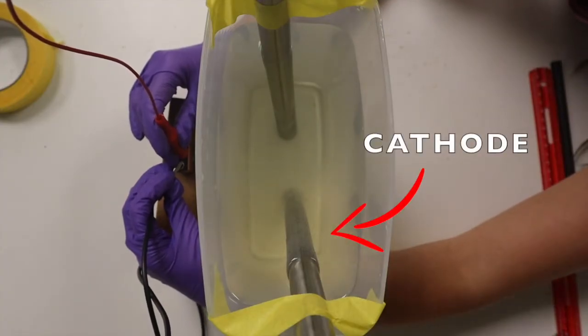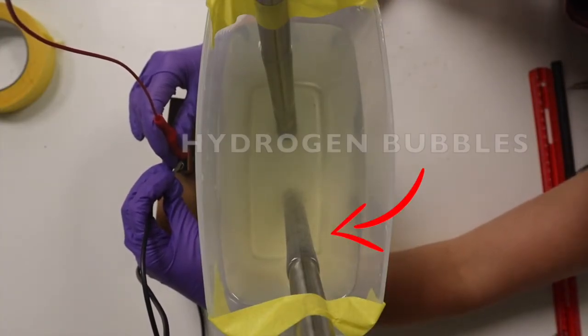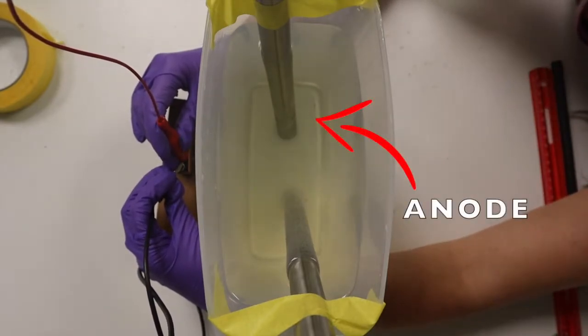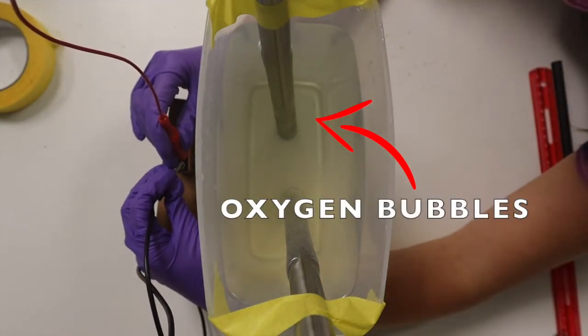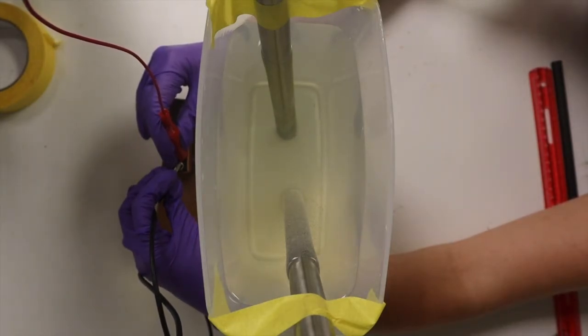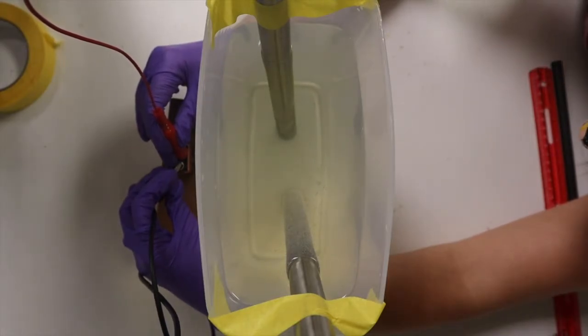On the cathode, which is the name for the negative terminal or electrode, which is the black one, you're getting hydrogen. And on the anode, which is the positive terminal or electrode, you're getting oxygen. So since there's two hydrogen and one oxygen per molecule of water, you're going to get twice as much hydrogen as you are oxygen, which is why the hydrogen evolution, as we call it, is twice as fast. And you can see it a lot more.